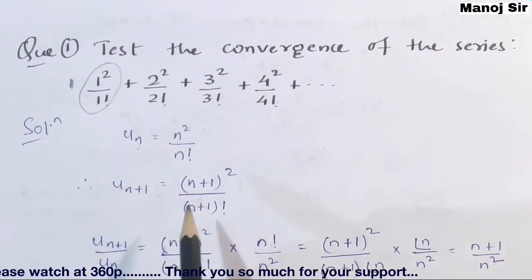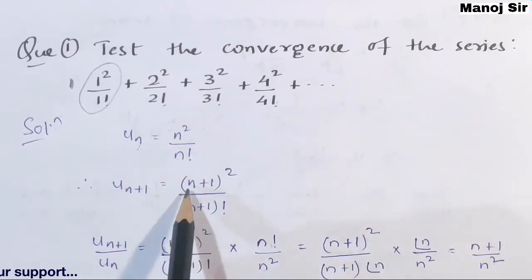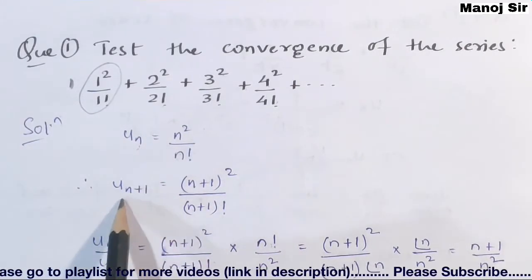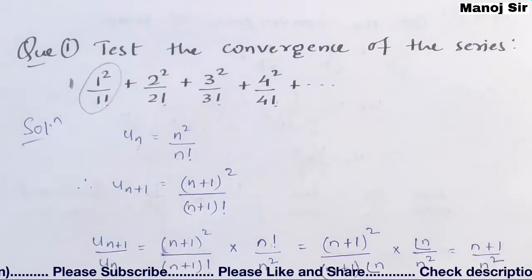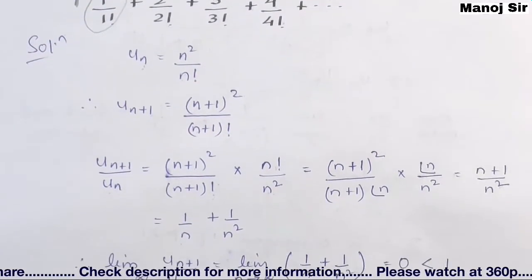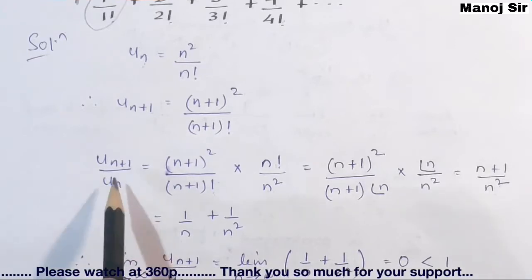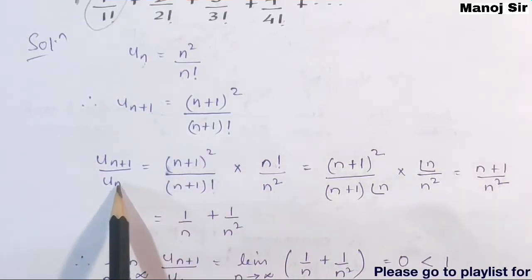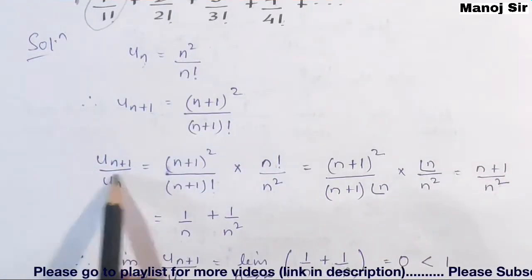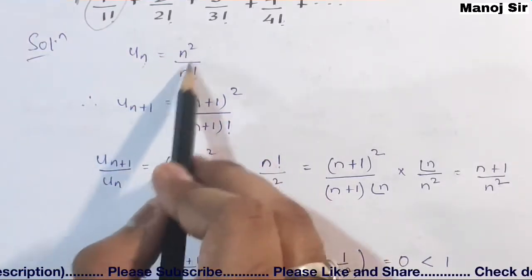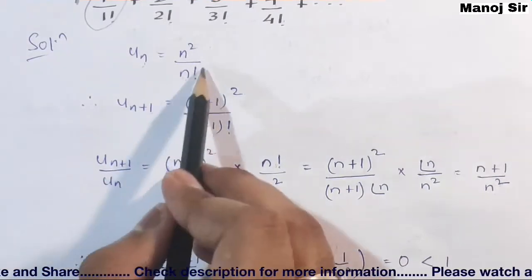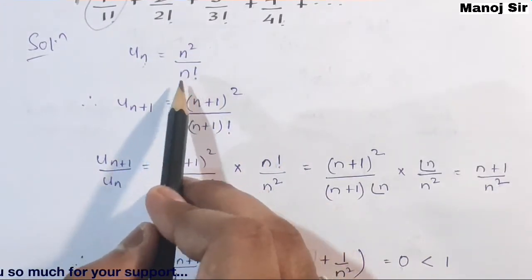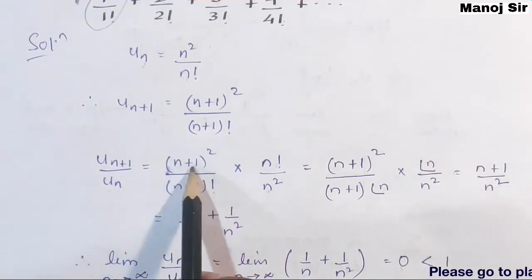In the same way we find UN+1: replace n with n+1, giving UN+1 = (n+1)² / (n+1)!. So we have UN+1 and UN. Now we compute UN+1 upon UN: that is (n+1)²/(n+1)! divided by n²/n!. Since UN is in the denominator, its numerator n² goes to the denominator and its denominator n! goes to the numerator.